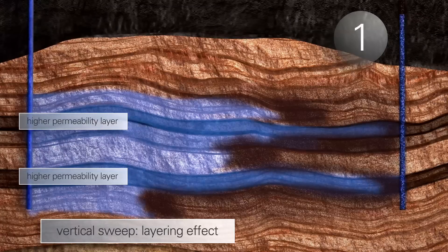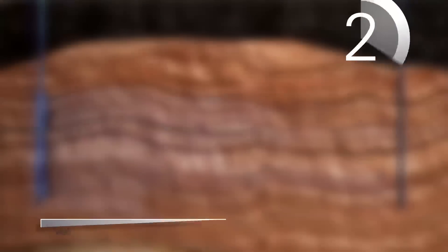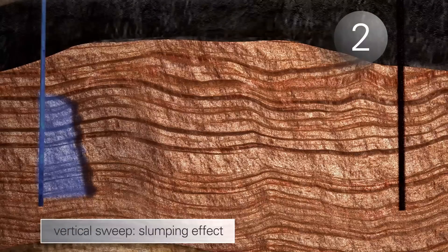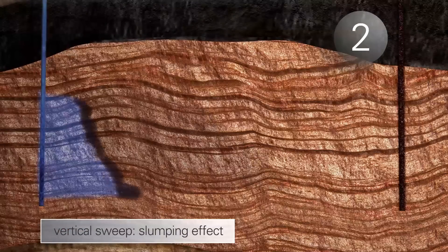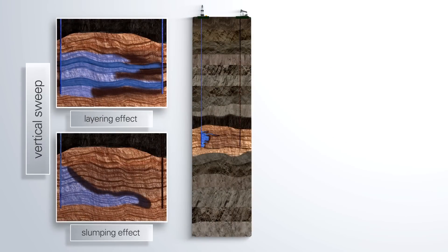Second, due to the water being heavier than the oil, it tends to slump down under the oil and break through to the production well at the base. The impact of layers and slumping influence the vertical sweep of the reservoir.